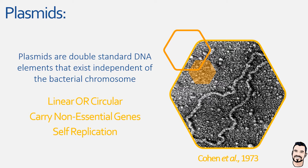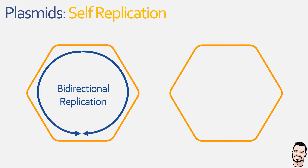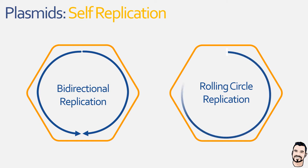Plasmids can replicate almost as and when they like, not just during cell division. However, it is very common for them to replicate during cell division because much of the machinery required is in abundance at that time, and it ensures daughter cells have enough copies of the plasmid. There are two different methods of plasmid replication: the first and less common is bi-directional replication, starting at a single origin site and proceeding in two directions simultaneously. The second is rolling circle replication, which is unidirectional and is the more common mechanism — and what this video covers.